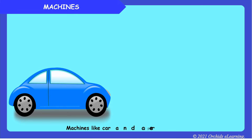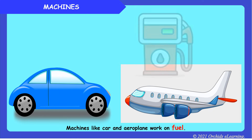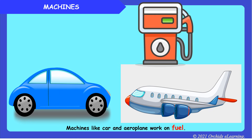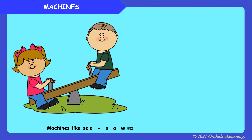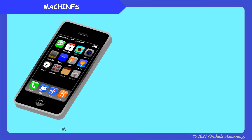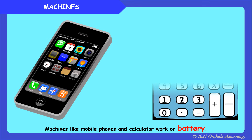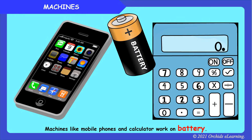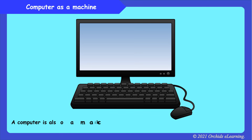Machines like television and iron work on electricity. Machines like car and airplane work on fuel. Machines like seesaw and tricycle use our energy to work. Machines like mobile phones and calculator work on battery. Similarly, a computer is also a machine.